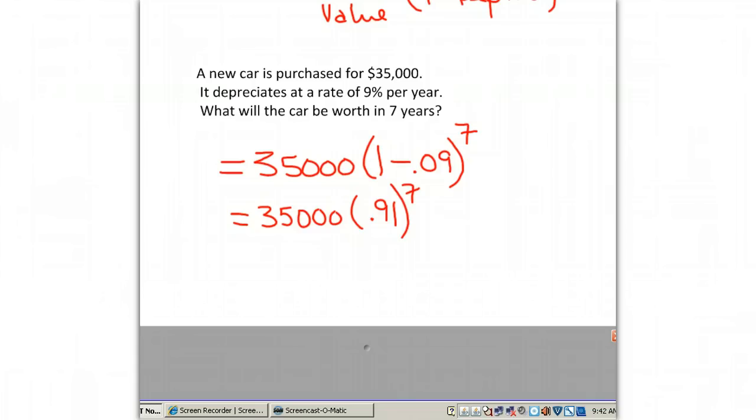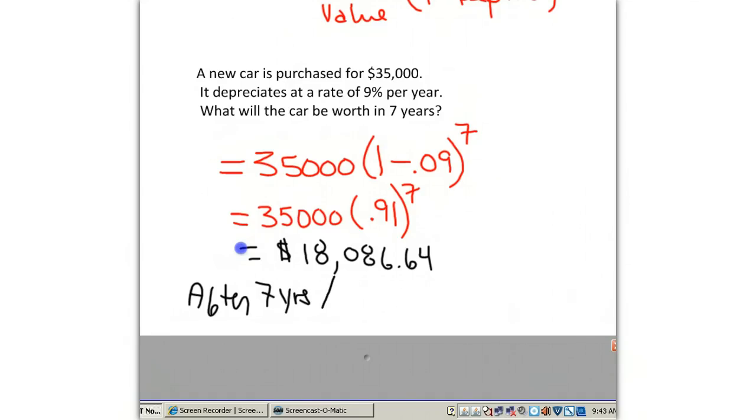And $35,000 times 0.91 to the 7th power is equal to $18,086.64. So this is saying that after 7 years, this is what our brand new car 7 years later is worth. And that's the idea of depreciation.